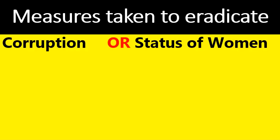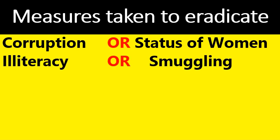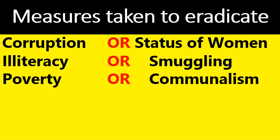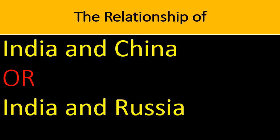Also have a look at Angulirayana and Rani Charnama. Write the measures taken to eradicate poverty in terms of protection, status of women, illiteracy, smuggling, poverty, and communalism — any of these may be very important and most repeatedly asked questions. India and China and India and Russia's relationship are also likely to be learned for the coming examination.